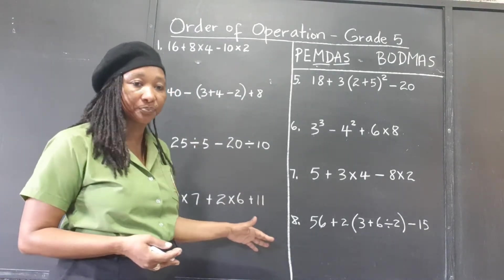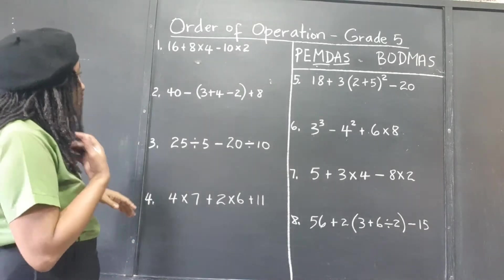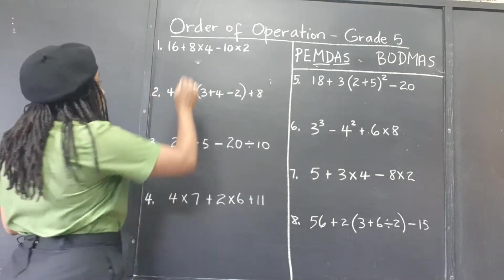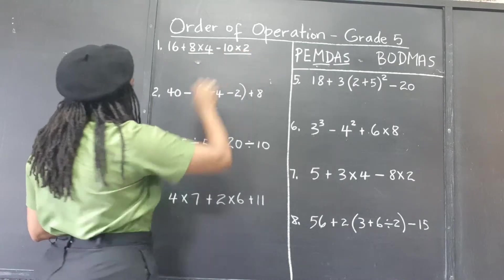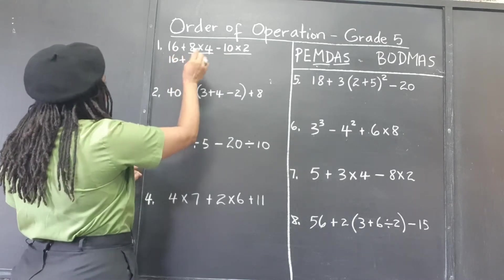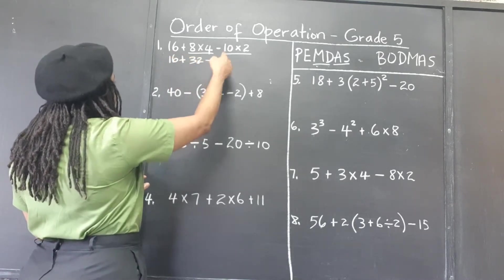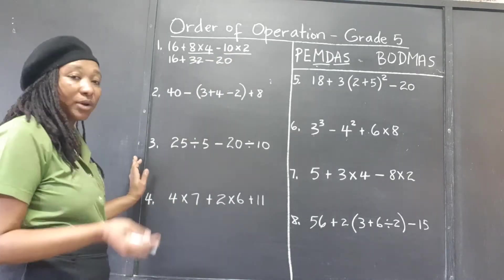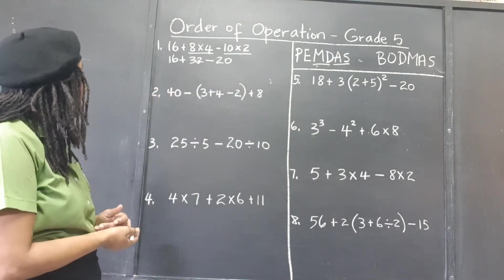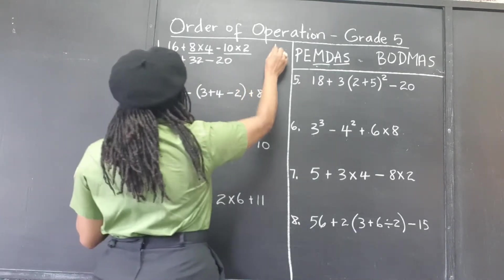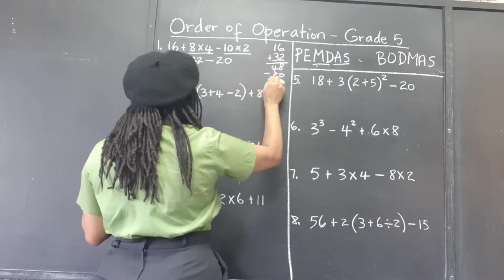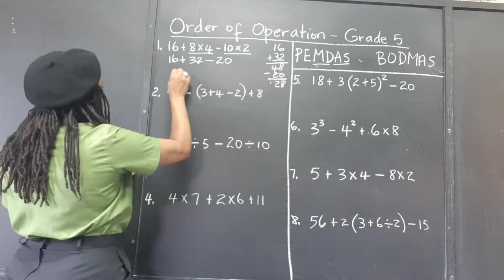Let's work these examples following the rules. We don't see any parentheses, we don't see any exponents. So we know we have to work our multiplications first, before we do the addition and the subtraction. 8 times 4 is 32, and 10 times 2 is 20. Now that we've handled the multiplications, 16 plus 32 is 48, and 48 take away 20 is 28. Our final answer is 28.